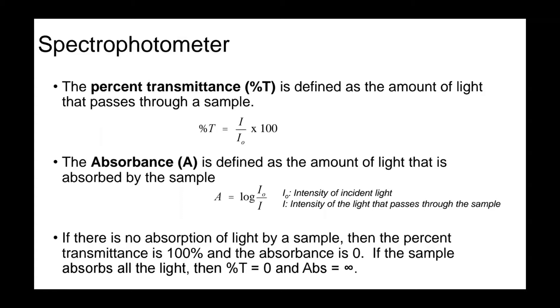An absorbance A is defined as the amount of light that is absorbed by the sample. A equals log of I₀ divided by I. It is important to note that if there is no absorption of light by a sample, then the percent transmittance is 100% and the absorbance is zero. If the sample absorbs all the light, then the percent transmittance is zero and the absorbance is infinity.